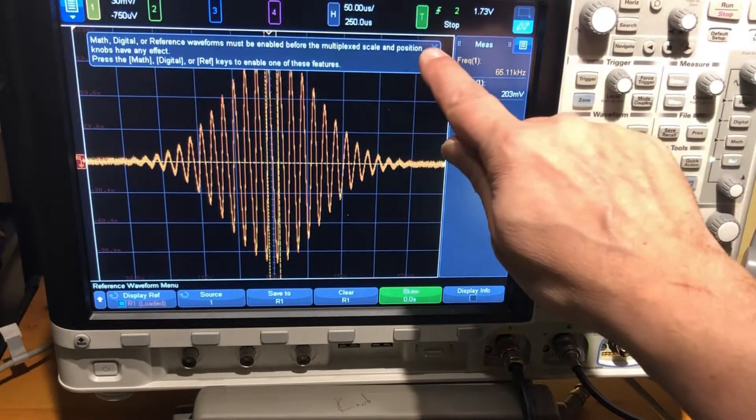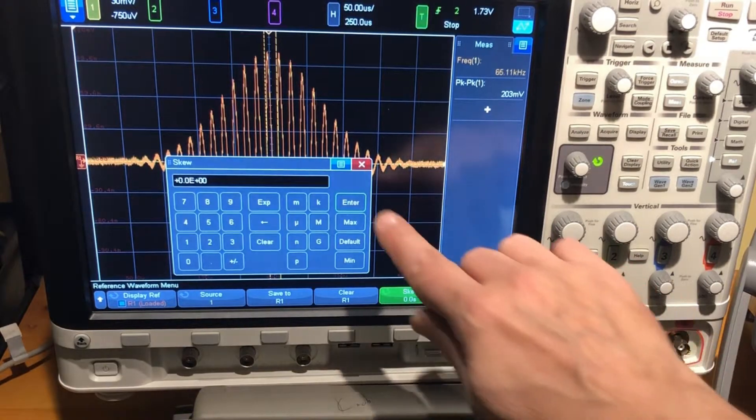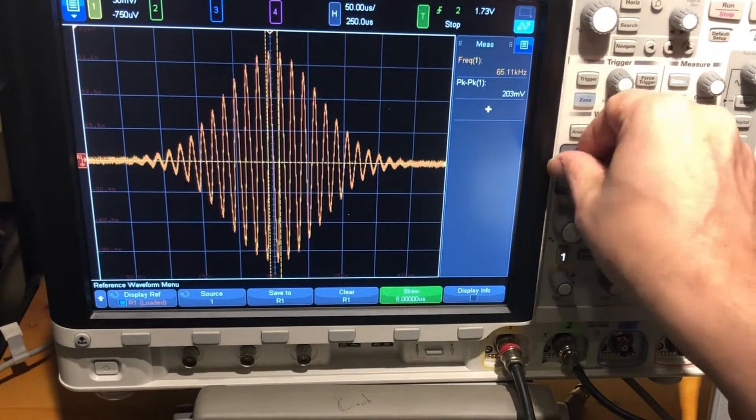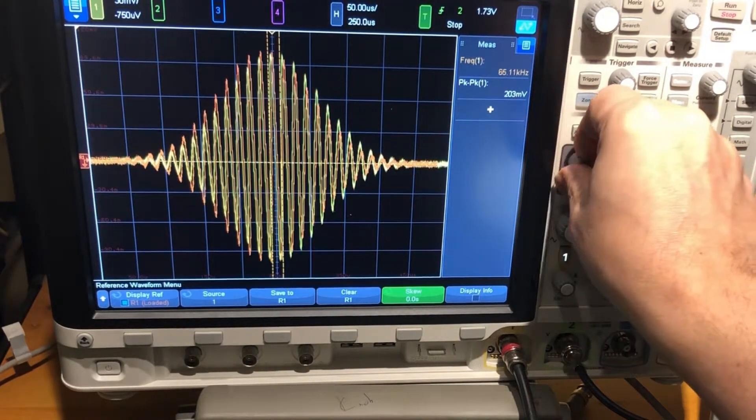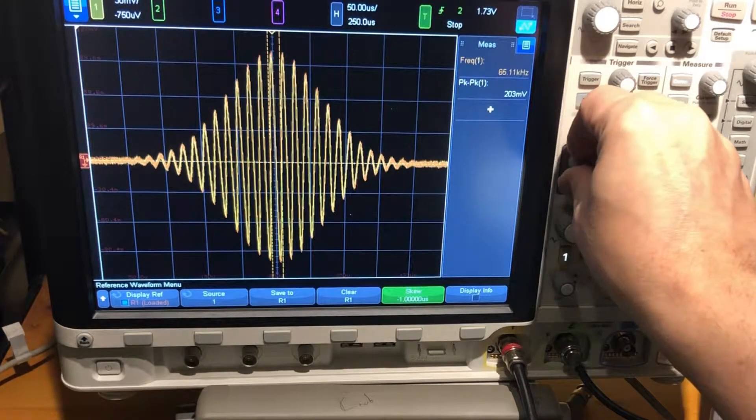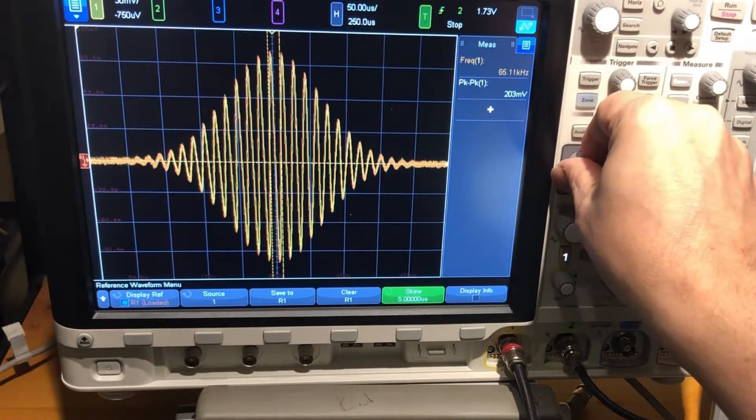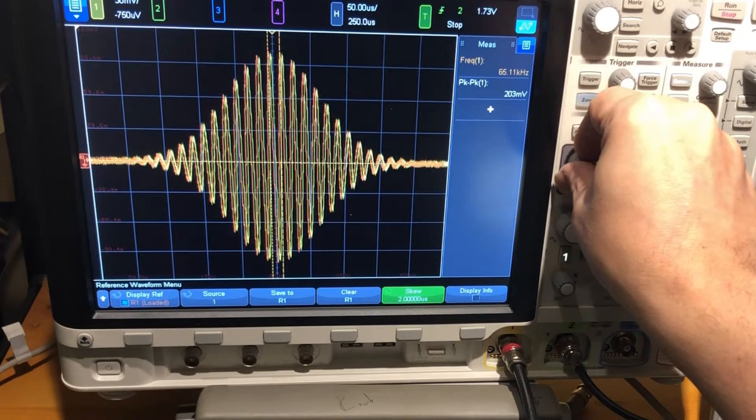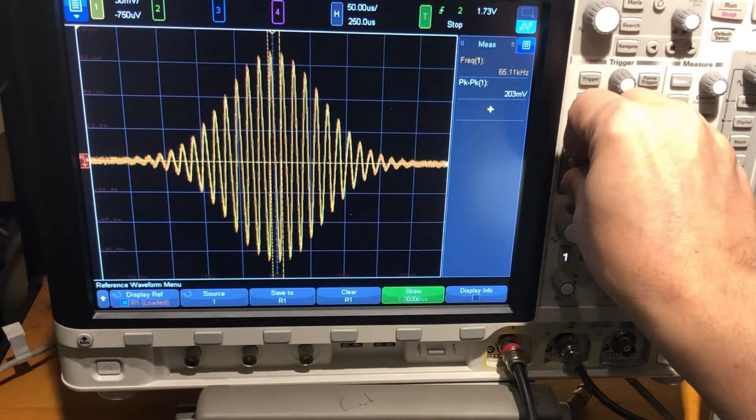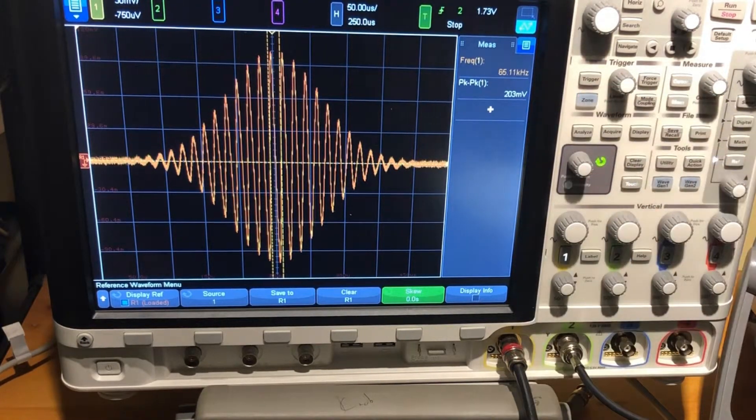And we're going to just adjust the skew so we can line up what was generated from the other. Slightly smaller. If we want to make some tweaks to that we can go back to the arbitrary pattern generator. So that's kind of the way it's done now.